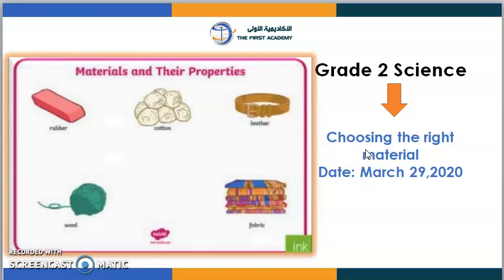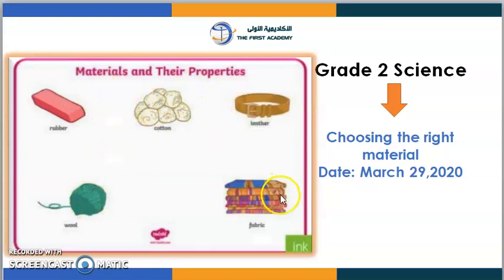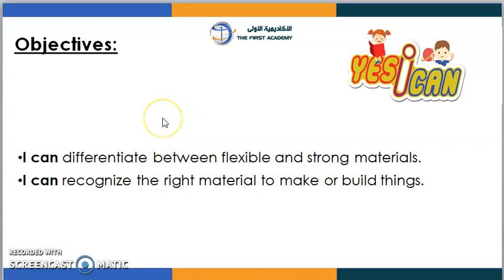Before starting the lesson, I want you to get a piece of paper and a pencil, and write today's date. Now look at the picture over here and tell me what you can see. I see rubber, cotton, leather, wool, and fabric.